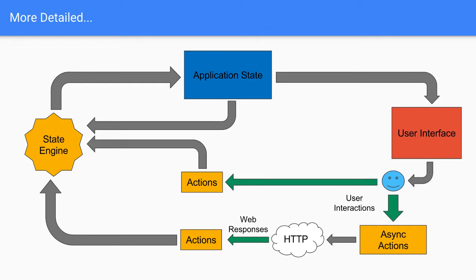On whether all the state being centralized means it's being copied all the time: yes, you do create new instances for each action, but you use a library that makes that efficient — Immutable.js in my case. It provides asymptotically efficient immutable data structures. When you make a new instance that's like an old one plus some change, it doesn't copy the entire thing — they're internally represented as trees, so it can share parts of the tree when creating new objects.